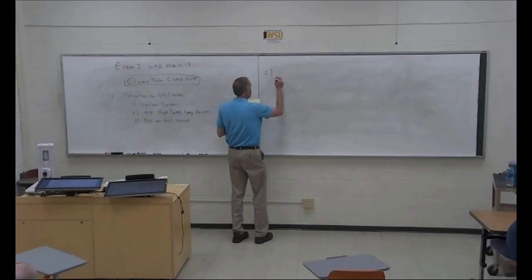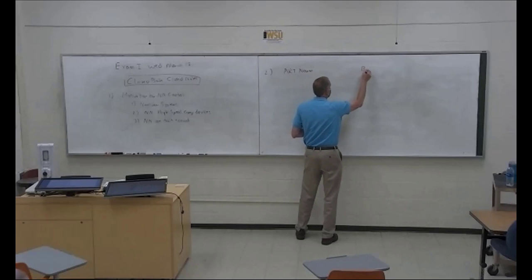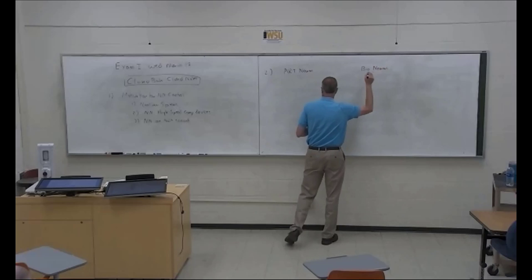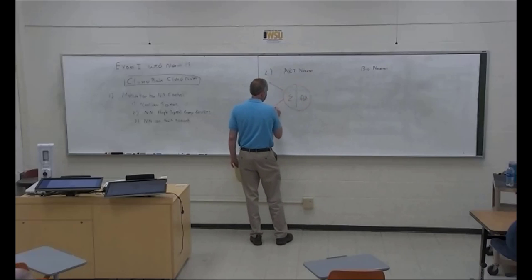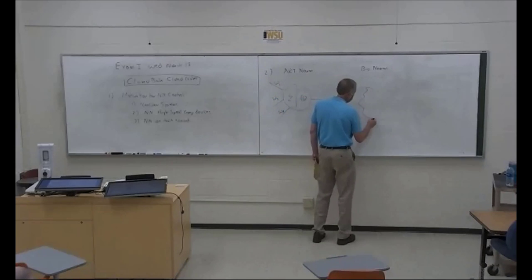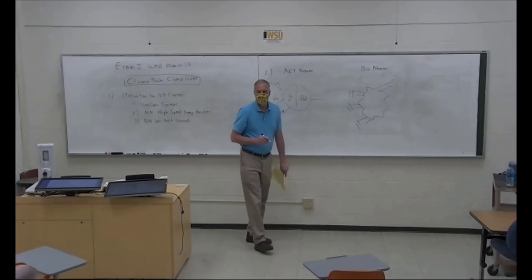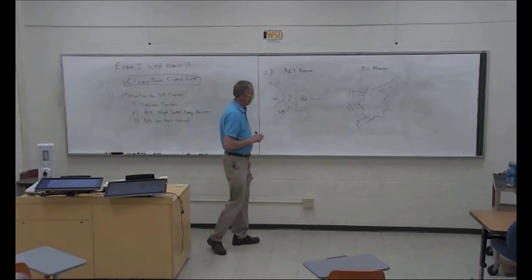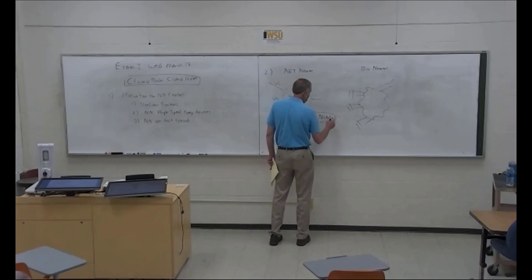Second thing is we talked about an artificial neuron versus a biological neuron. You should be able to draw a picture of the perceptron with the weights and the biological neuron — including dendrites and synapses. Make sure you can draw and label both, and also understand how these things are modeled after the biological neurons.